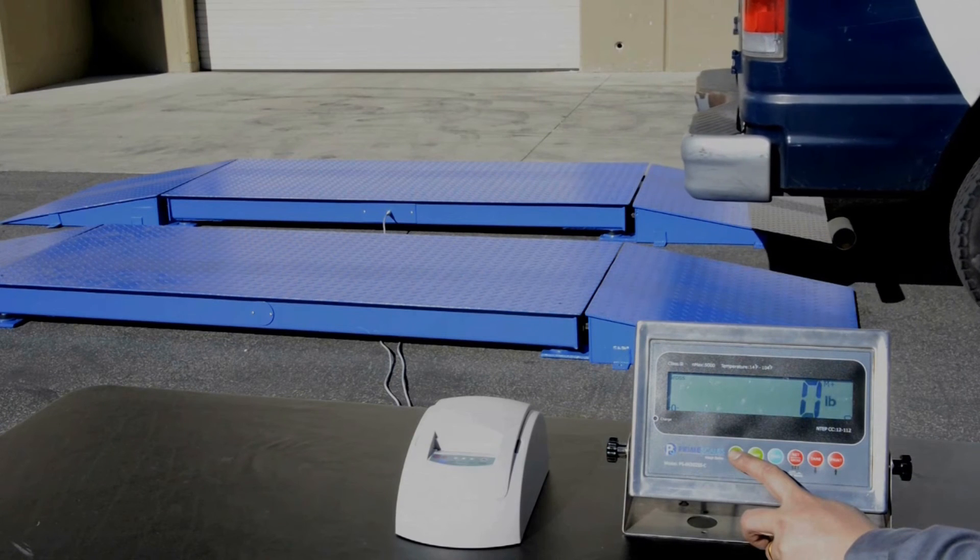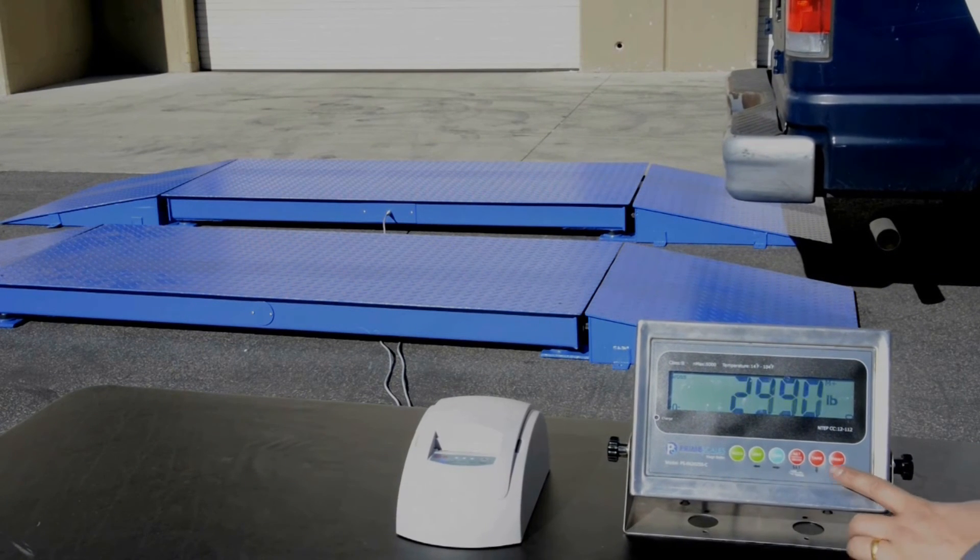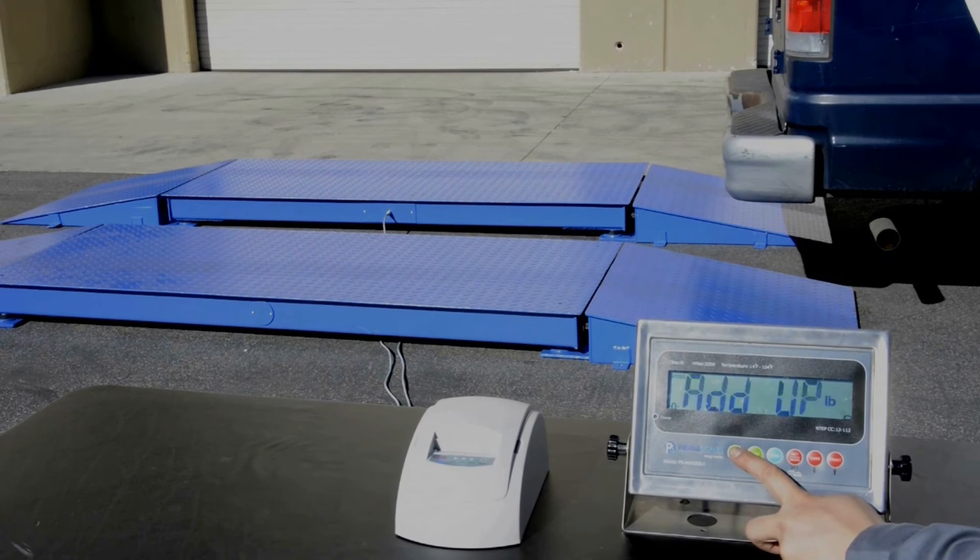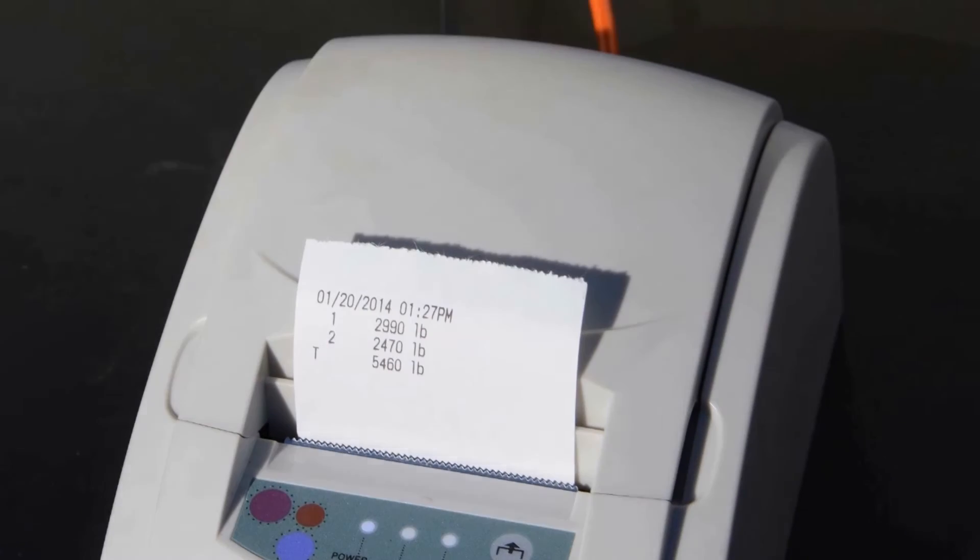Press and hold the ACCU button on the indicator. The indicator will show the axle weight one by one, then the total weight. Now, press the print button to print the axle weights and the total weight.